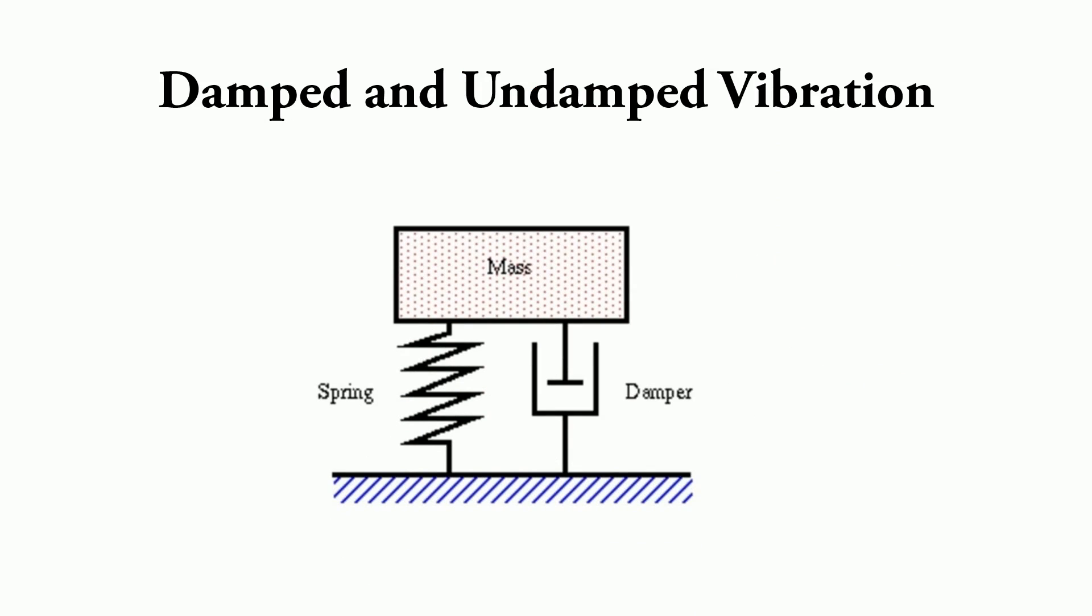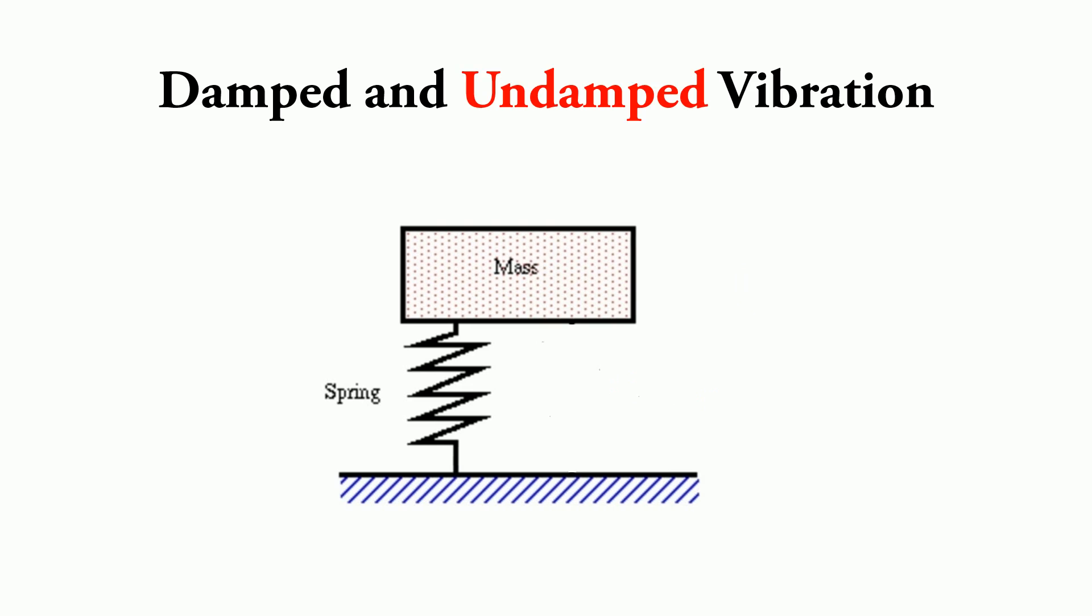Damped and undamped vibration. If the vibratory system has a damper, the motion of the system will be opposed by it. This type of vibration is called damped vibration. On the other hand, the system having no damper is known as undamped vibration.